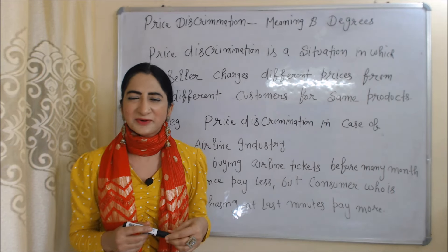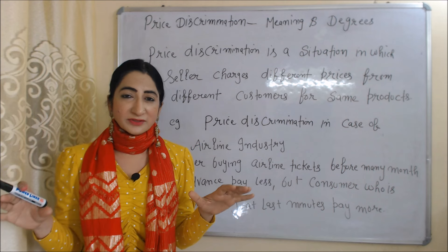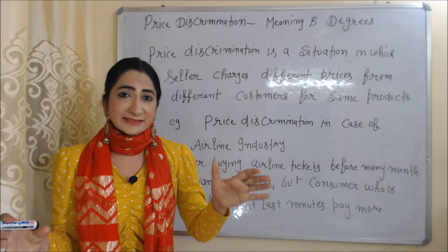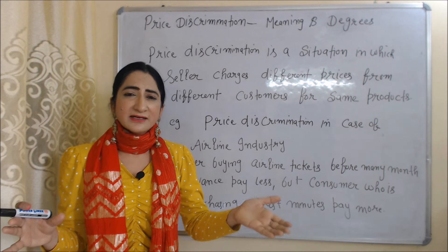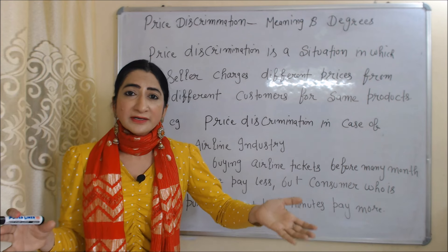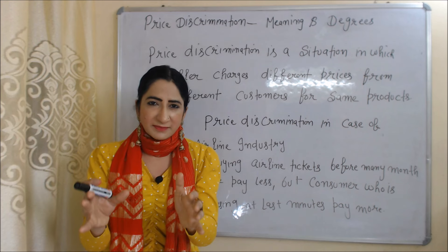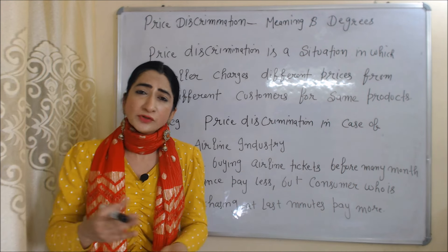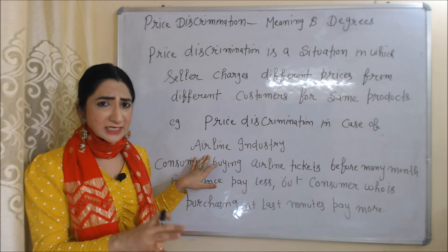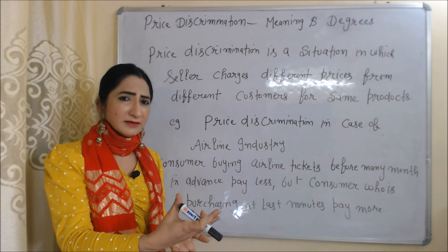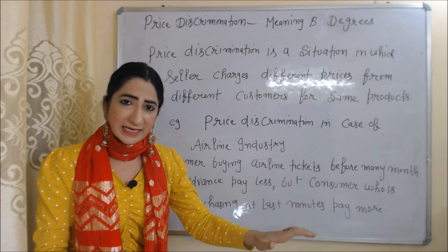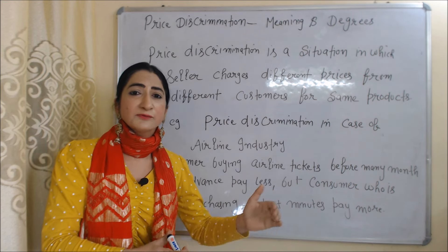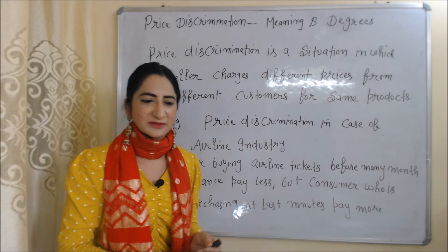Hello everyone, my name is Minni Sati. I hope you all are staying healthy. Today we are going to talk about meaning and degrees of price discrimination. Price discrimination is a situation in which a seller charges different prices from different customers for the same product. For example, in the airline industry, customers who buy tickets many months in advance pay less, but customers buying at the last minute pay more.